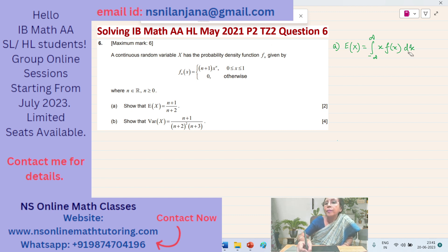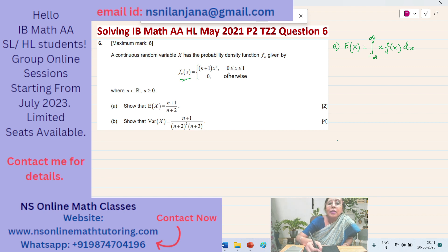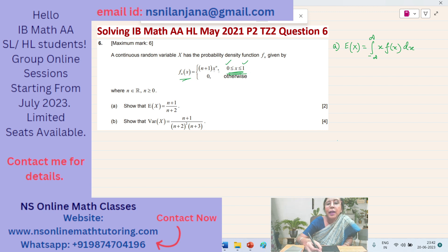Now for f_n(x), we will not be taking the limits between negative infinity to positive infinity because this is the region where f_n(x) has a non-zero value. We will be taking the integration limits as 0 and 1, because from negative infinity up to 0 the function f_n(x) will be equal to 0, so the integral will be 0. Similarly, from 1 to positive infinity it will again be 0. So we will be taking the integral from 0 to 1.